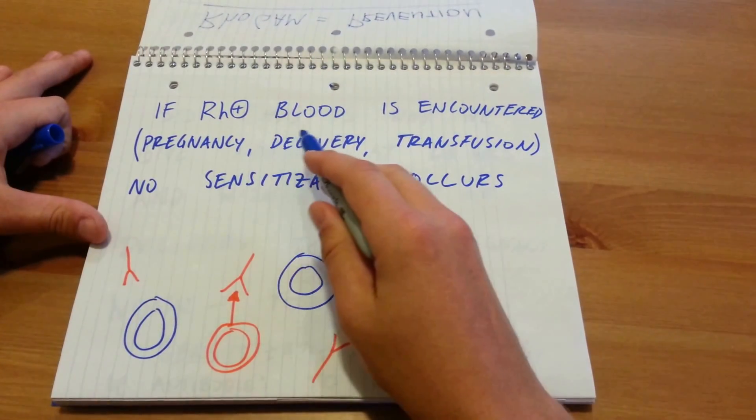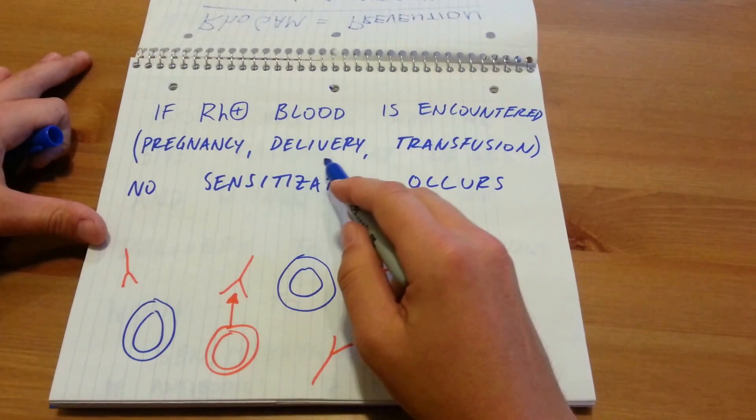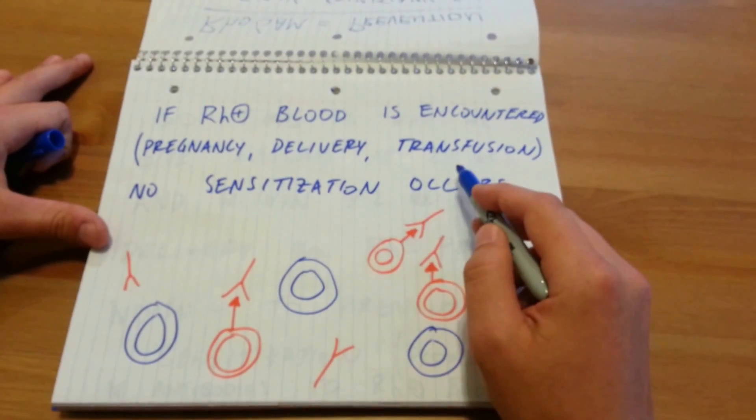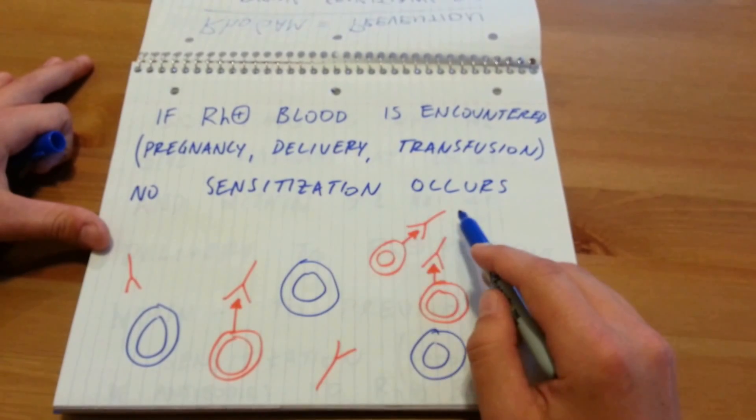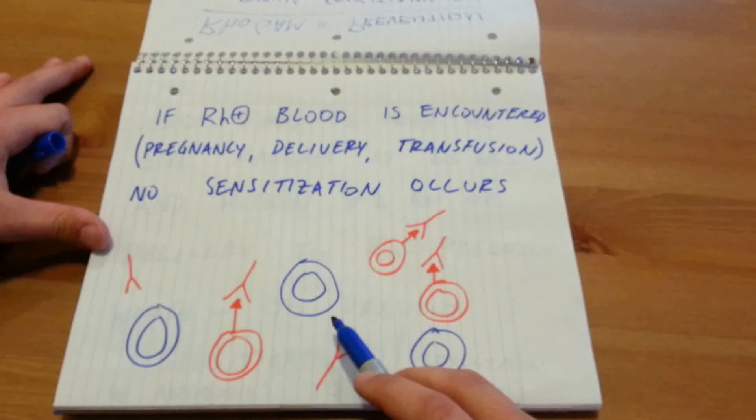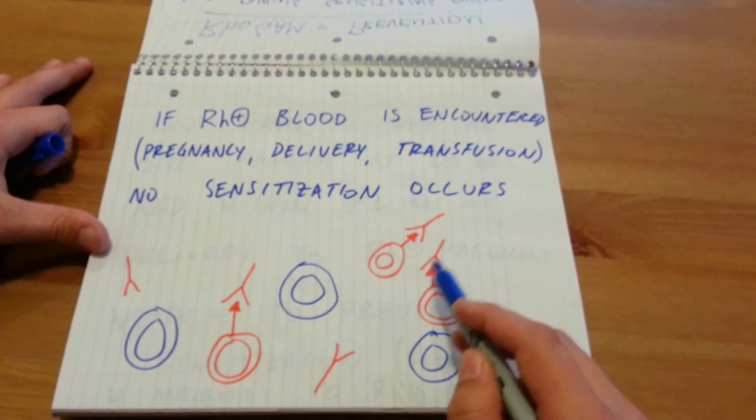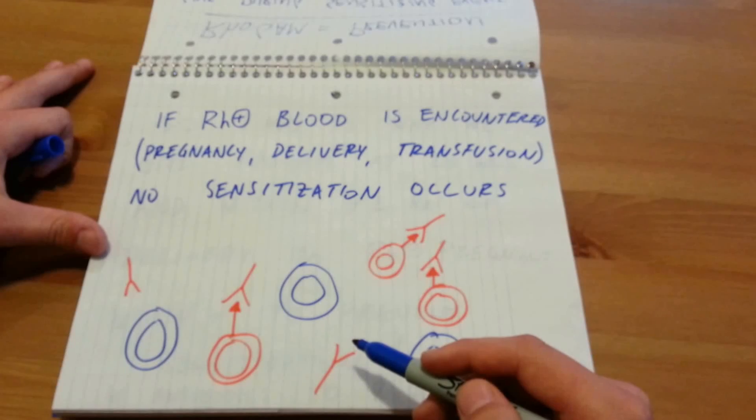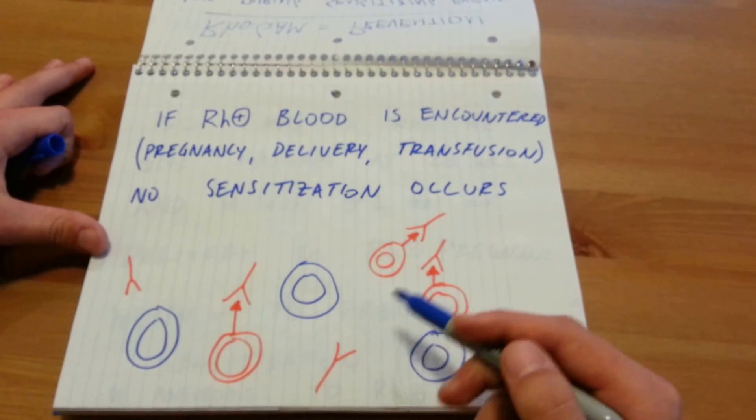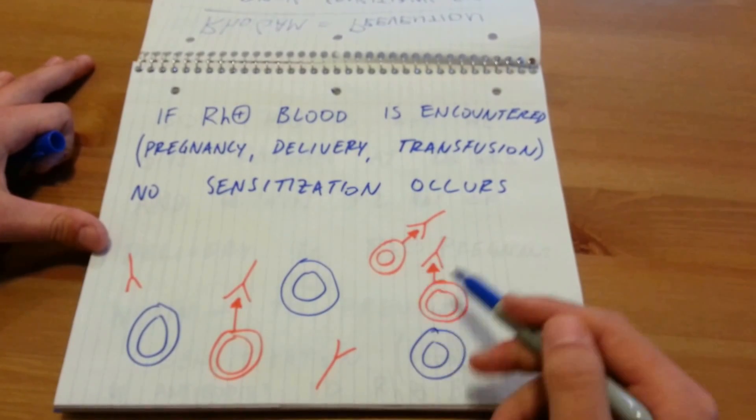Now, if the RH positive blood is encountered during pregnancy or delivery of the baby or blood transfusion, no sensitization occurs. Because like I said, your immune system doesn't see any antigens because all the antigens are already covered up by the RhoGAM. So your immune system knows nothing better and just thinks that you're being given RH negative blood because it doesn't see any antigens.